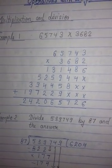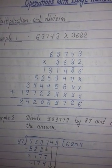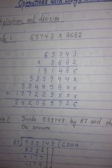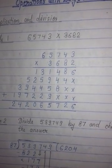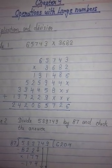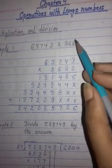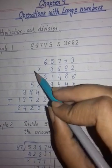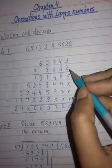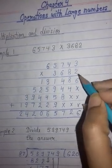In this, we have to multiply 65,743 by 3,682. So first of all, write the digits of both numbers at their proper place. We will start multiplication from the ones place.